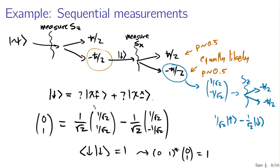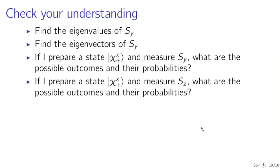Mathematically, all of this boils down to manipulation of two-component row and column vectors with two-by-two matrices — about as easy as matrices ever get. The spin one-half system is a very common test case for quantum mechanical systems. As an exercise, find the eigenvalues and eigenvectors of S sub Y, then determine the possible outcomes and probabilities when measuring S sub Y or S sub Z on an eigenstate of the x component of spin angular momentum.